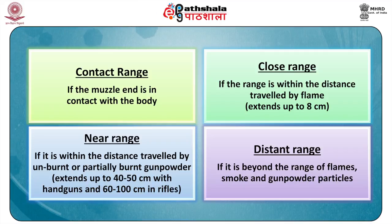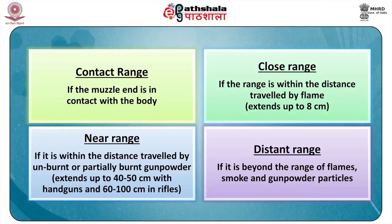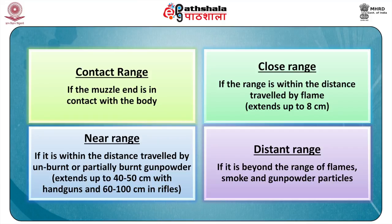Near range is within the distance traveled by unburnt or partially burnt gunpowder, which usually extends up to 40 to 50 cm with handguns and 60 cm to 1 meter in case of rifles. Distant range is when the shot is beyond the range of flame, smoke, and gunpowder.